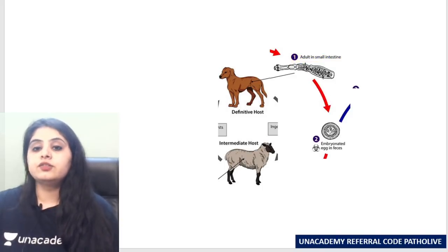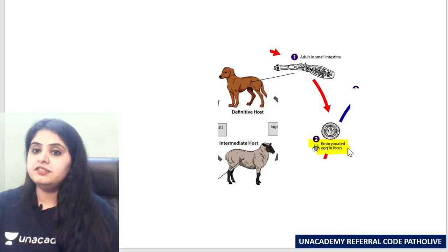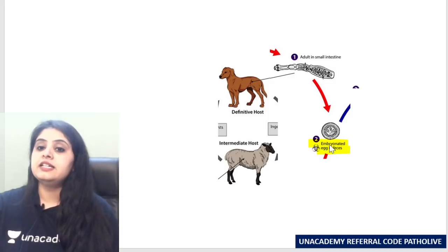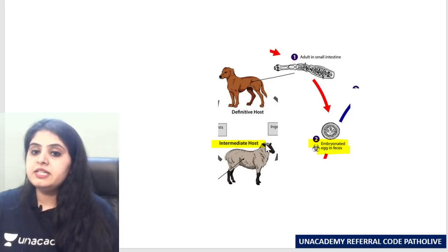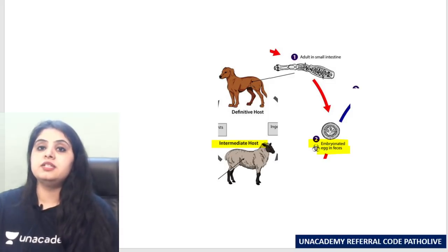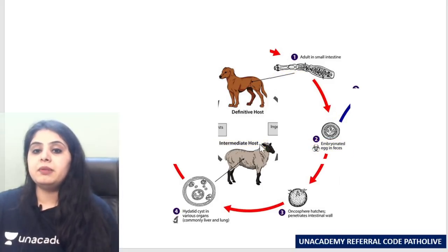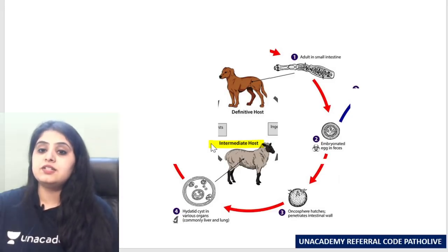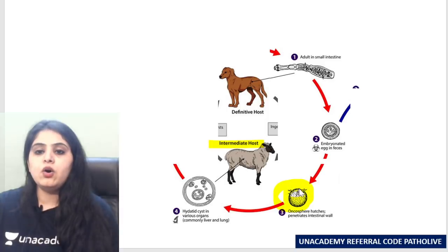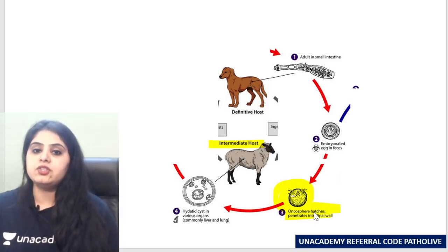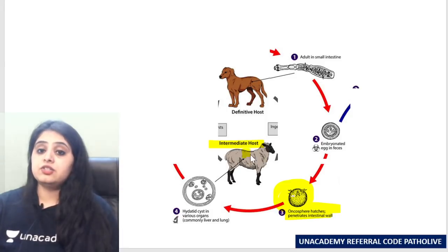The adults in the dog's small intestine lay down eggs, which are passed in the feces. These eggs are then eaten up by the intermediate host — sheep or cattle. From the egg, the oncosphere hatches out.